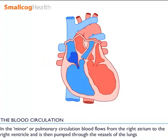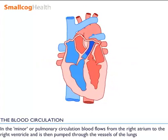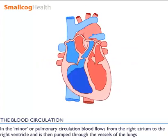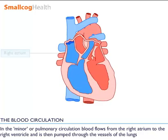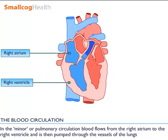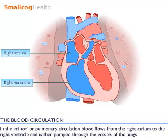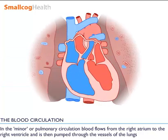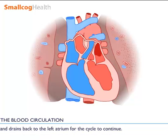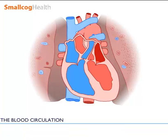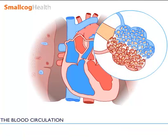In the minor or pulmonary circulation, blood flows from the right atrium to the right ventricle and is then pumped through the vessels of the lungs and drains back to the left atrium for the cycle to continue. Within the lungs, oxygen is added to the blood and carbon dioxide is removed.